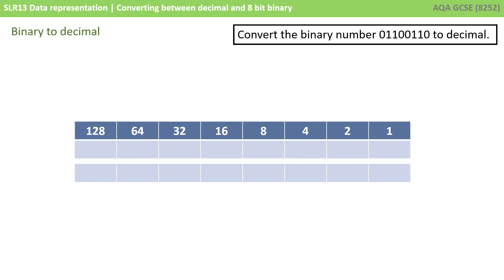If you're given 1 byte or an 8-bit binary number like this, just write out your 8 columns with the column weightings 1, 2, 4, 8, 16, 32, 64, 128. Now write the binary number from left to right under the columns.